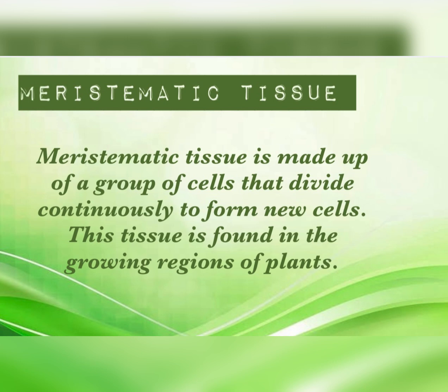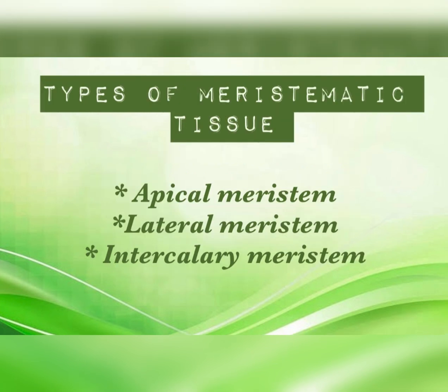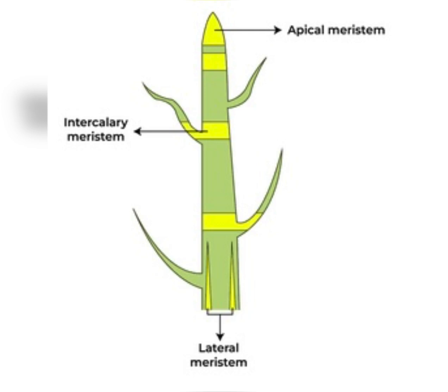Humans don't show this property because our body doesn't have meristematic tissue. Plants have meristematic tissue, that's why they divide and grow throughout their life. Meristematic tissue is of three types: apical meristem, lateral meristem, and intercalary meristem.